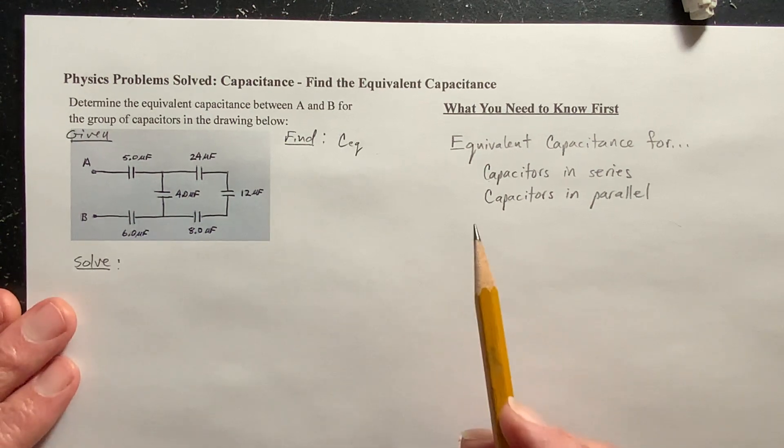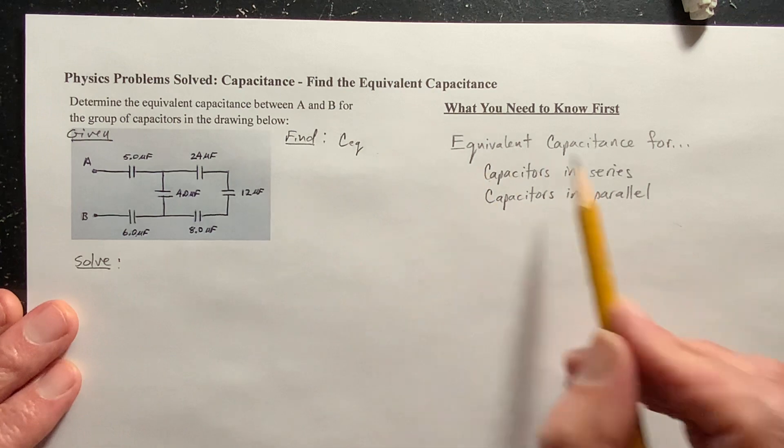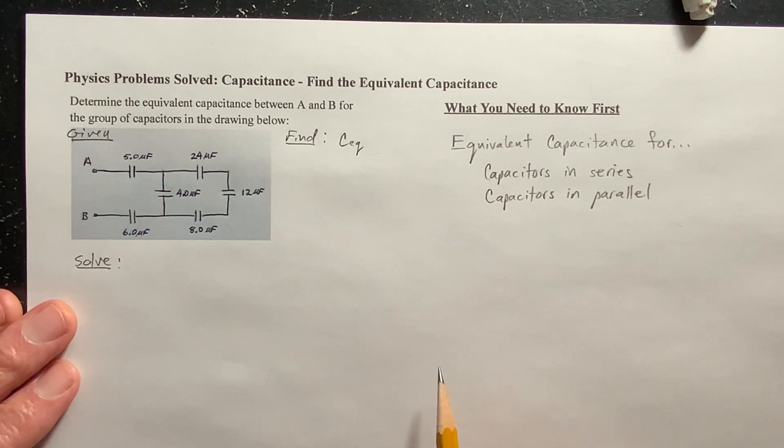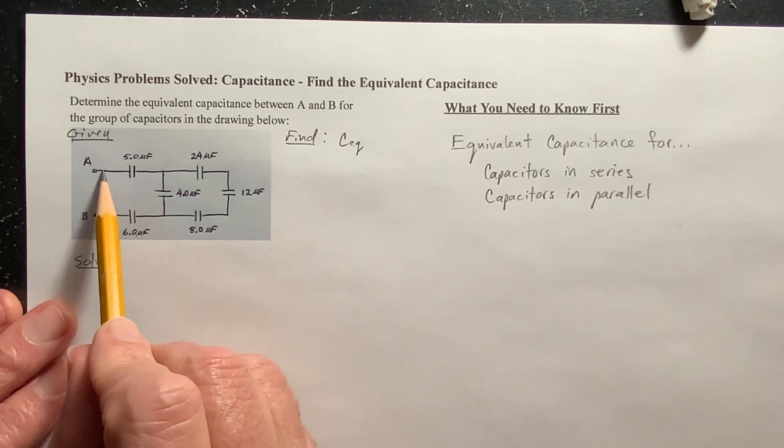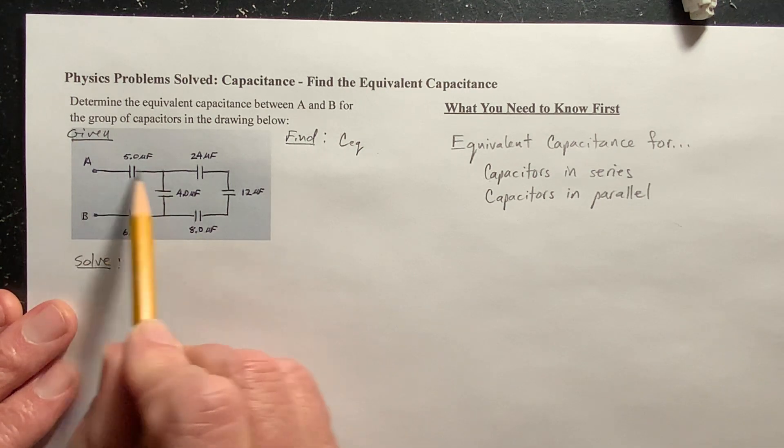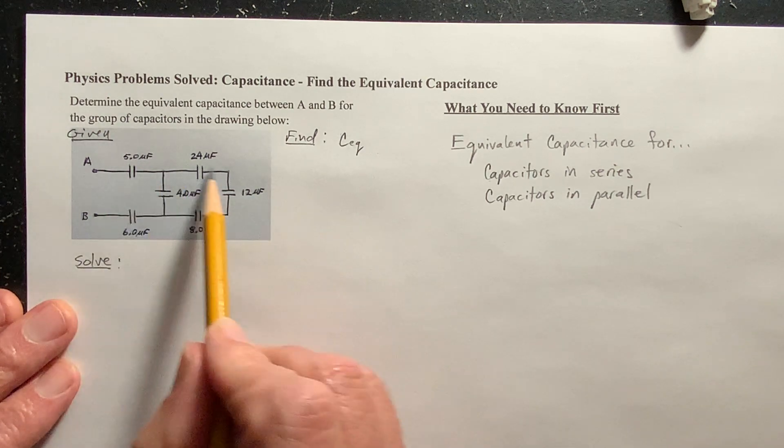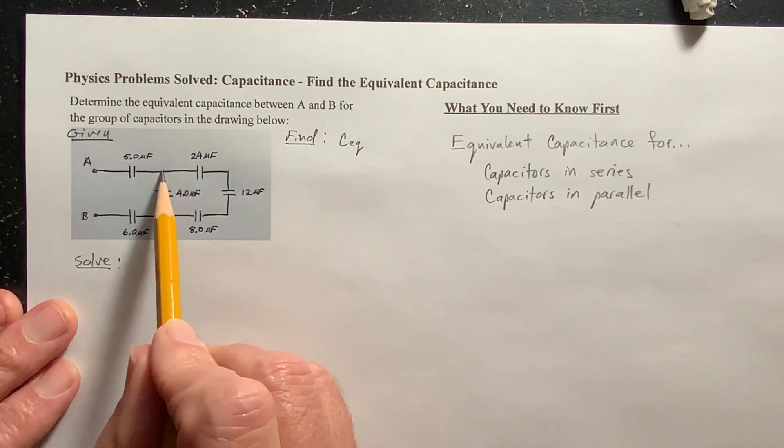And if they're in series, that means there is one path through the capacitors. Now, if I go through this one, well, this is not in series with anything, with any single capacitor, anyway, because the current, as it's filling these capacitors, can branch off. Right here, we have a junction.